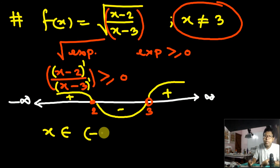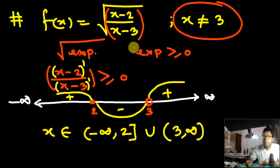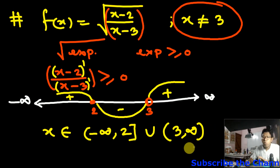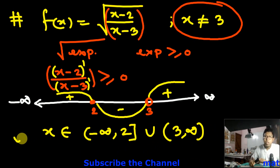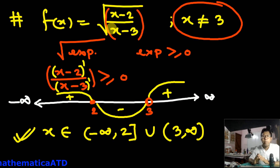So the domain is (−∞, 2] ∪ (3, ∞). The 2 is closed because x = 2 is included, and 3 is open because x−3 is in the denominator so x = 3 is discarded. This is the domain of f(x) = √[(x−2)/(x−3)].